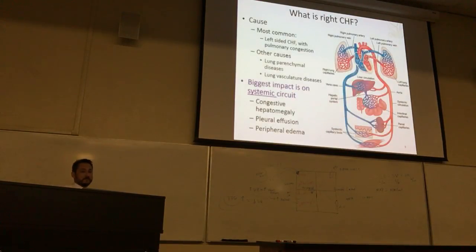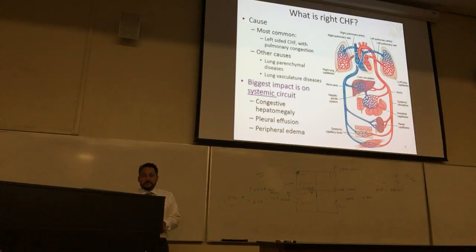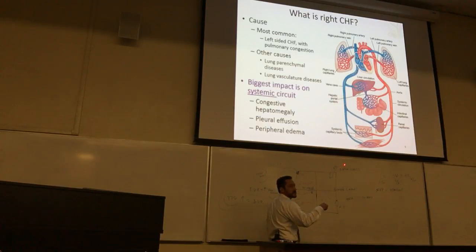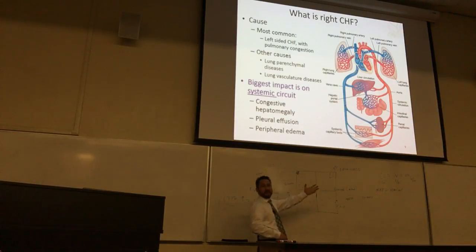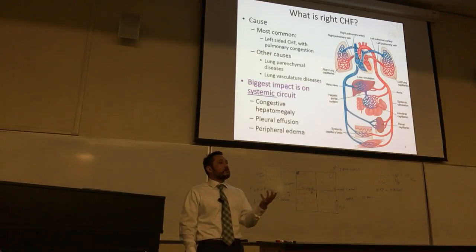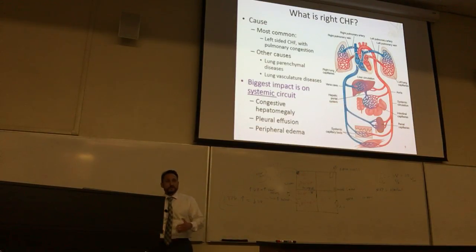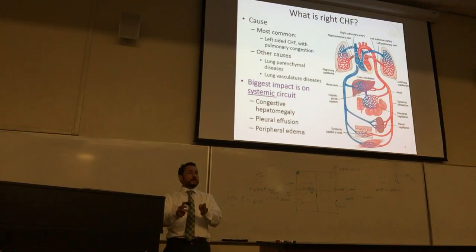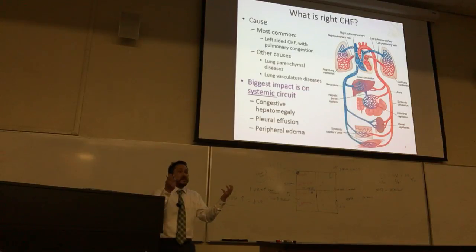Now let's look at right-sided heart failure. The most common cause of right-sided heart failure is actually left-sided heart failure. As the heart backs up to the lungs, if you have a higher fluid load in the lungs and the right side is pushing to the lungs, you effectively have an elevated afterload problem for the right heart — equivalent to what we see on the left side. The patient first develops left-sided heart failure, then pulmonary edema and congestion put extra pressure back on the right side.